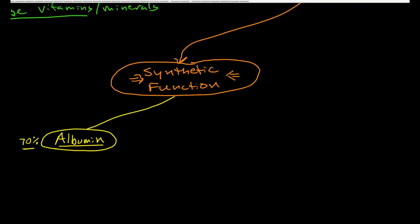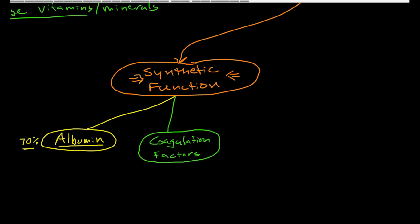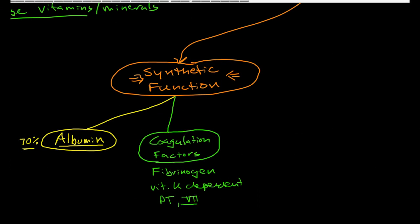The next important group of proteins are coagulation factors. Not all coagulation factors are produced in the liver, but a number of very important ones are. The most important is fibrinogen, which is produced in the liver. Most of the vitamin K-dependent factors are also produced in the liver — for example, prothrombin, factor seven, factor ten, and factor nine, to name a few. I would say the majority of clotting factors are produced in the liver. Without the synthetic function of the liver, the blood cannot clot effectively.